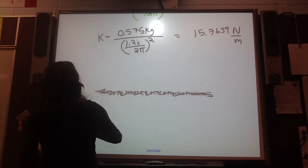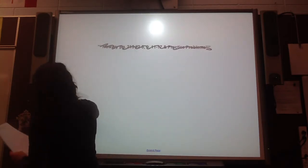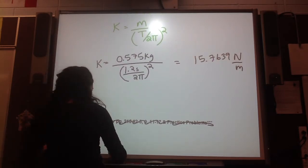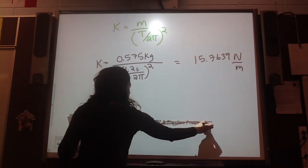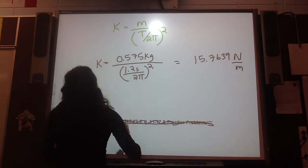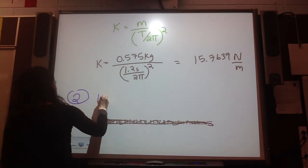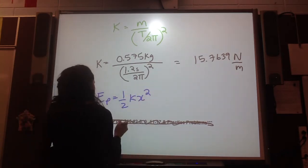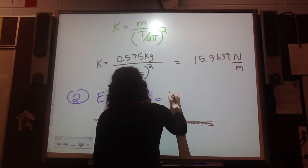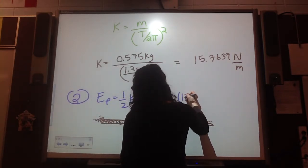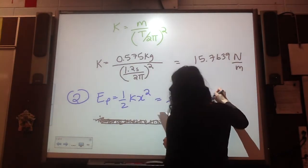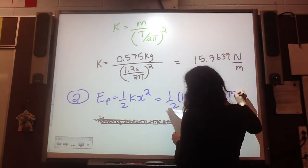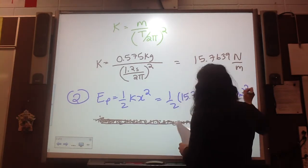Now is our second calculation. So calculation number 2 is where we go EP is equal to half KX squared. So this is equal to half times 15.7639 newton meters times by 0.150 meters, and that value is squared.